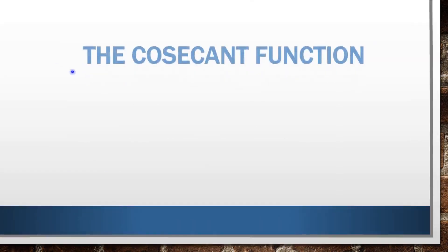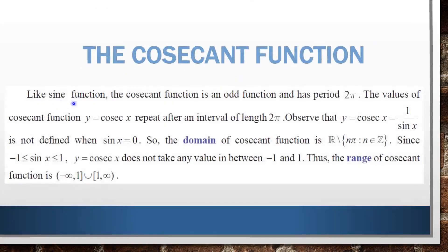First, we are going to see the cosecant function. Like the sine function, the cosecant function is an odd function and has period 2π. Similar to the sine function, the cosecant function is also an odd function and has period 2π. The values of cosecant function y = cosecant x repeat after an interval of length 2π.